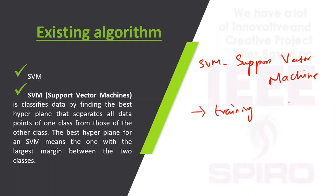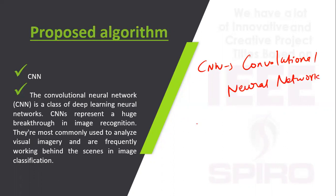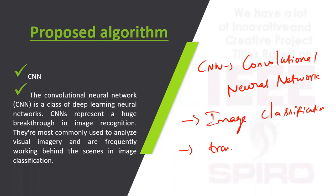In our proposed system we are using CNN — Convolutional Neural Network. CNN is a subset of artificial intelligence and it is used for image classification based on the training data images. It is one step more advanced when compared to machine learning.